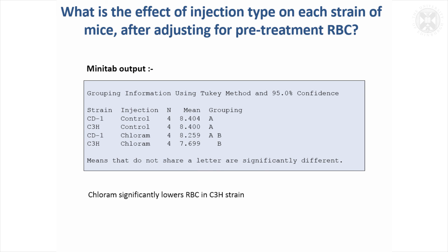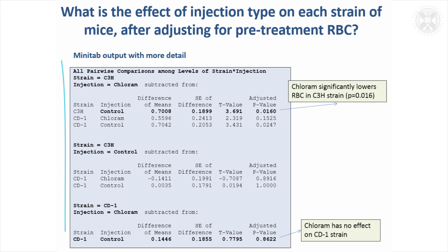We go on to see for which strains the injection had a significant effect. The same strain, C3H, can be identified as significant — the control is different from chlorum. Although the interaction p-value changed a bit, we're still able to show a significant effect there. The other strain turned out to be non-significant.